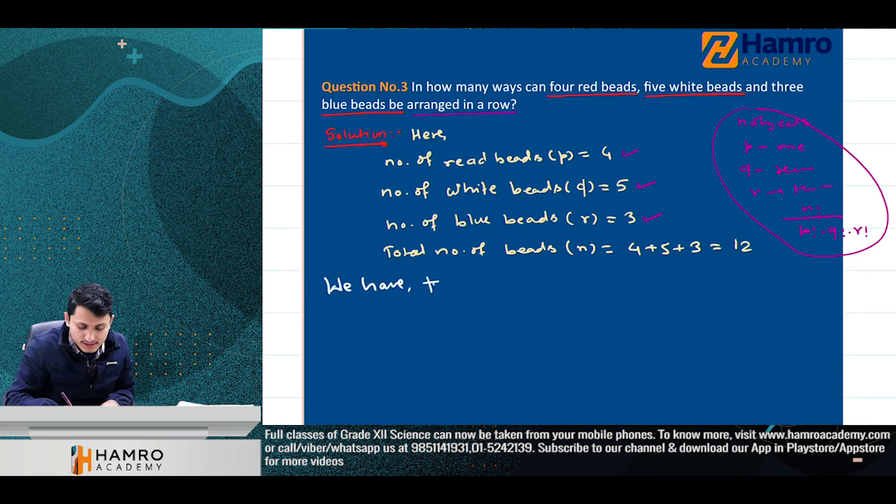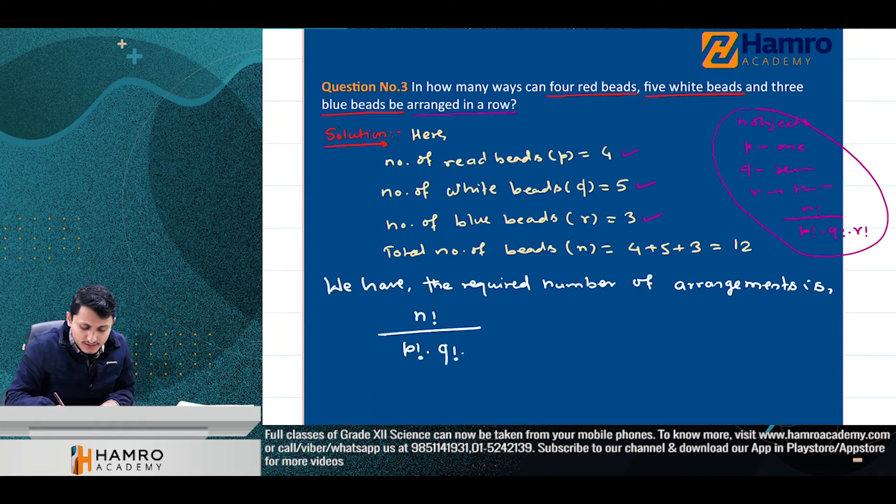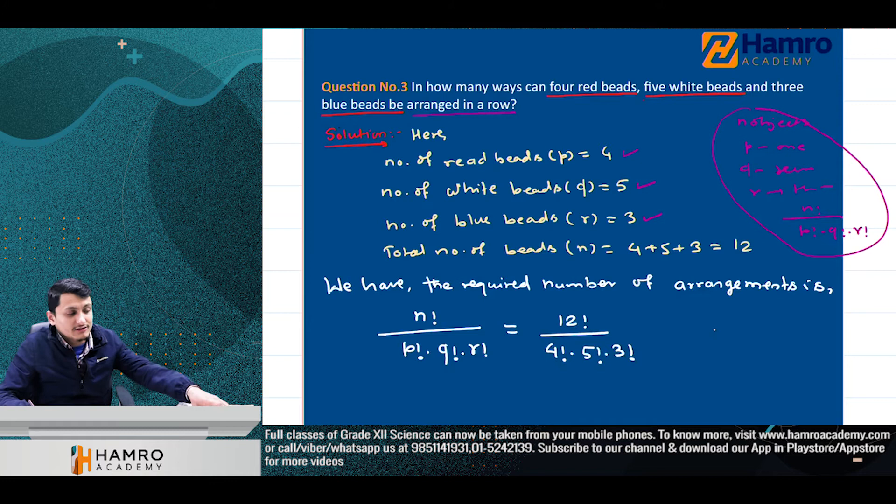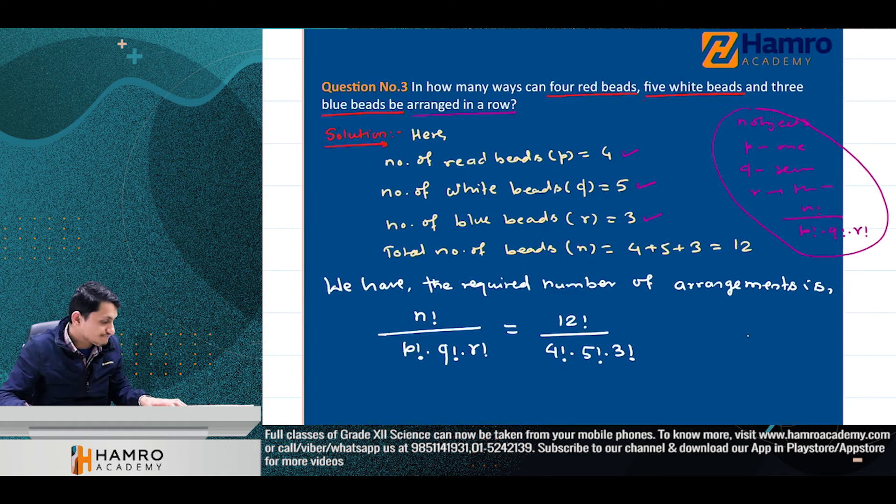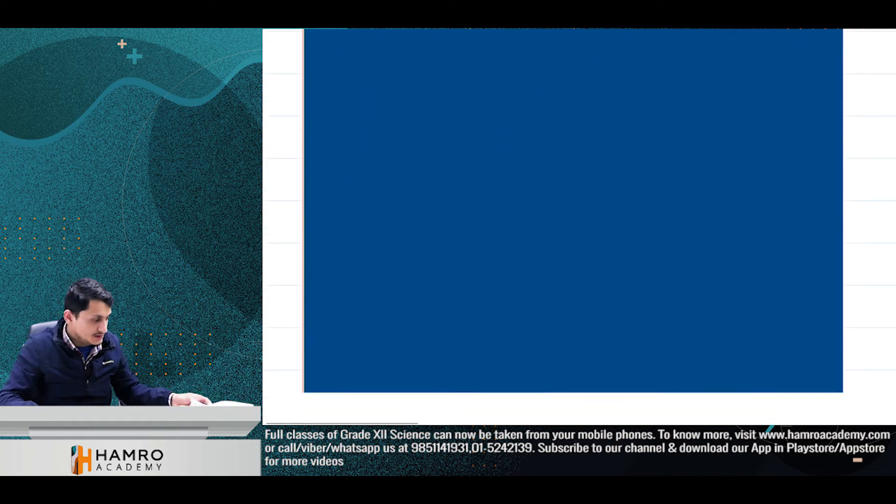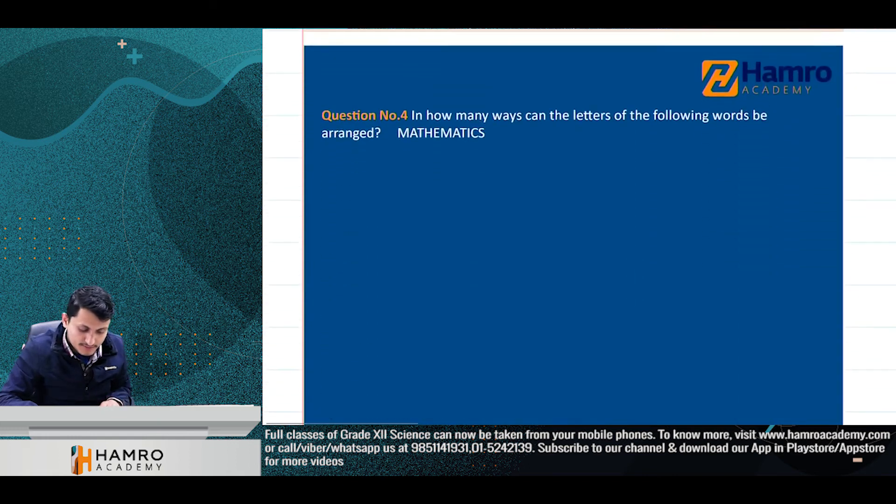The required number of arrangements is given by n factorial divided by p factorial times q factorial times r factorial. The value is 12 factorial divided by 4 factorial times 5 factorial times 3 factorial. We can calculate this value. Now let's go to the next problem.